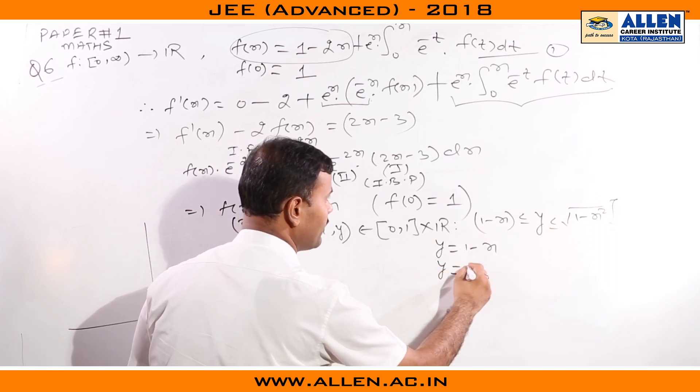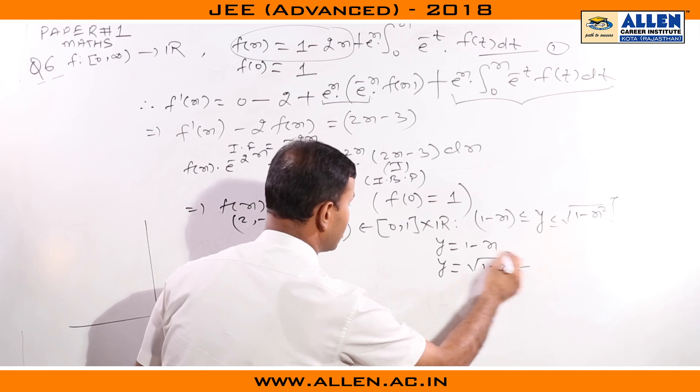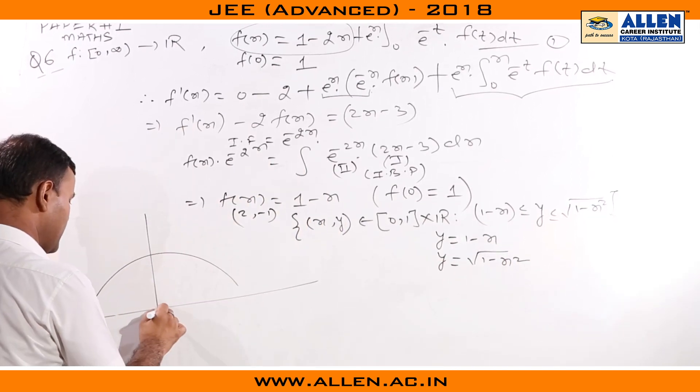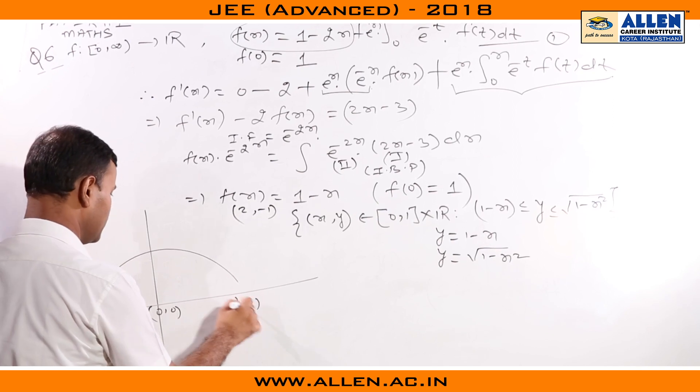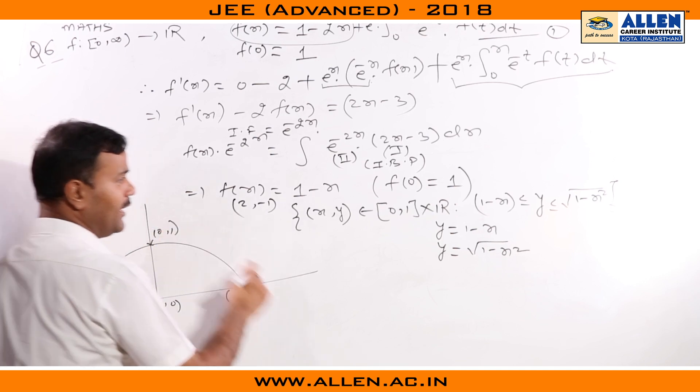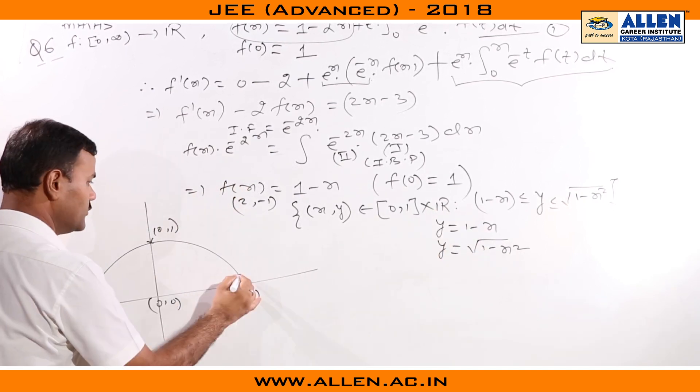We draw it. We have y = 1 - x and we are also given y = √(1 - x²). This is the equation of a semicircle with center at origin and radius 1. This point is (0,1) and this is the line joining these two points.